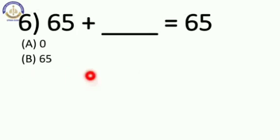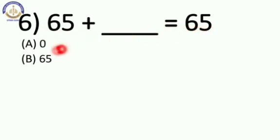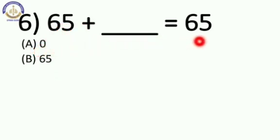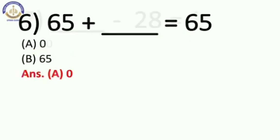Now next: 65 plus blank is equal to 65. There are two options: A is 0 and option B is 65. If we add 0 to 65 — 65 plus 0 — we get 65. So our answer is A, 0.